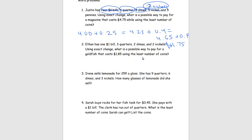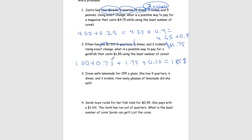Using exact change, what is a possible way to pay for a goldfish that costs $1.85 using the least number of coins? Similar to number 1, we start with the dollar bill, crossing it out — that's $1.00. We still need 85 cents, so we move to quarters. 3 quarters — since 3 times 25 equals 75 — we add $0.75, getting us $1.75. We're only off 10 cents, and 1 dime equals 10 cents, so we add $0.10 to get $1.85. So a possible way is Ethan using 1 $1 bill, 3 quarters, and 1 dime.